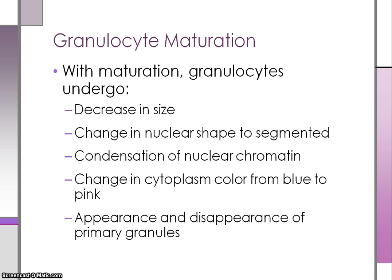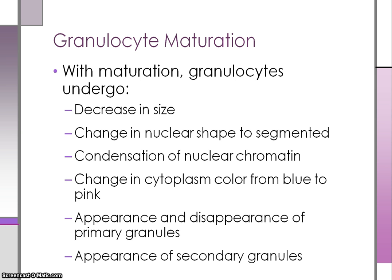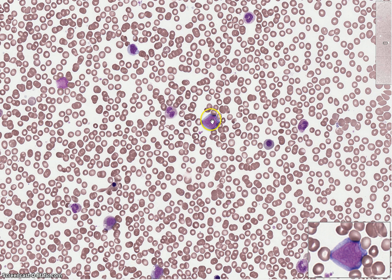Primary granules appear at the promyelocyte stage. The primary granules are usually not visible past the promyelocyte stage, and then secondary or specific neutrophilic, basophilic, or eosinophilic granules are apparent from the myelocyte stage onwards.